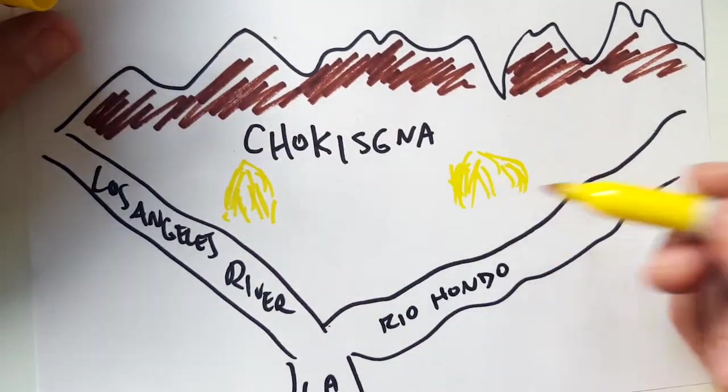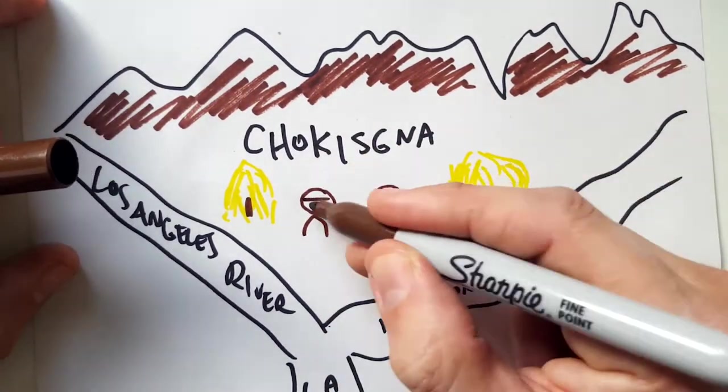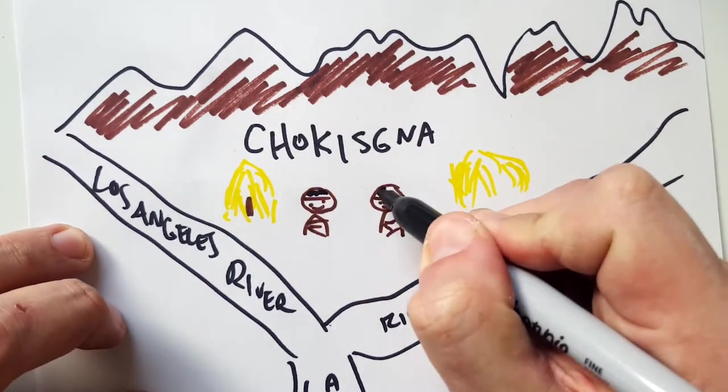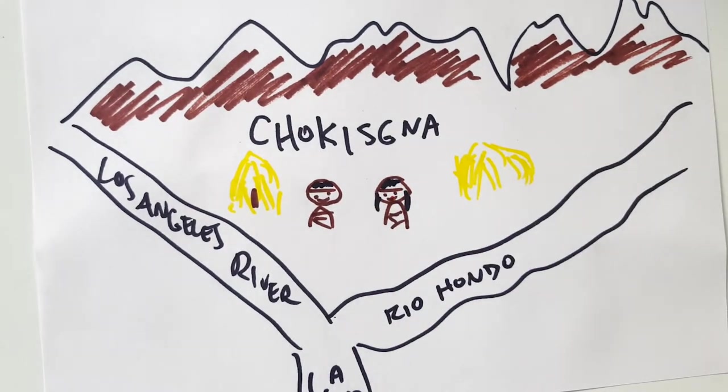They were called the Choc Iskna, recorded to have lived in the area where Bell Gardens is now. It's right about where the Los Angeles River and the Rio Hondo come together and there was a big agricultural area.